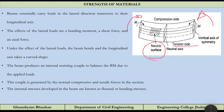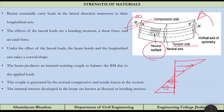That fiber or axis having zero strain is known as the neutral surface — neutral meaning nothing has happened, no compression, no tension. The beam produces an internal resistance couple to balance the bending moment due to the applied load. This couple is generated by the normal compressive and tensile forces in the section, resulting in a couple due to horizontal tensile and compressive forces.